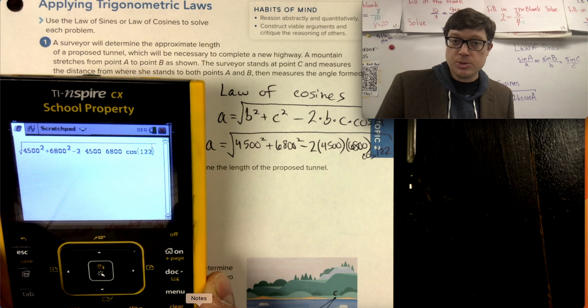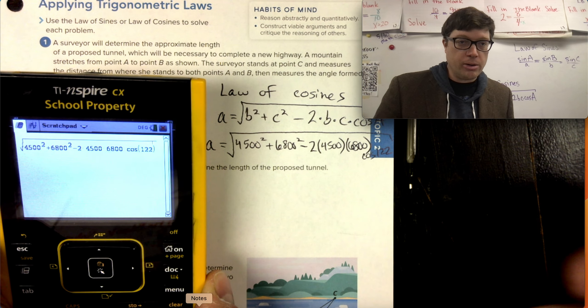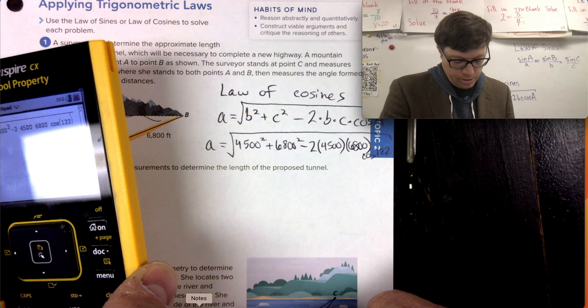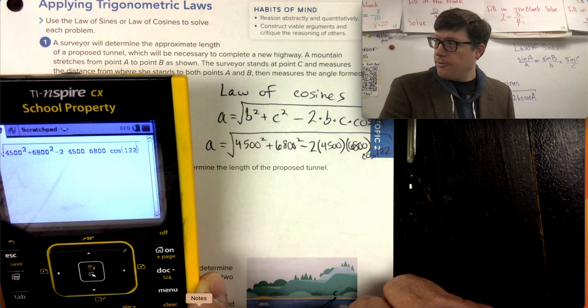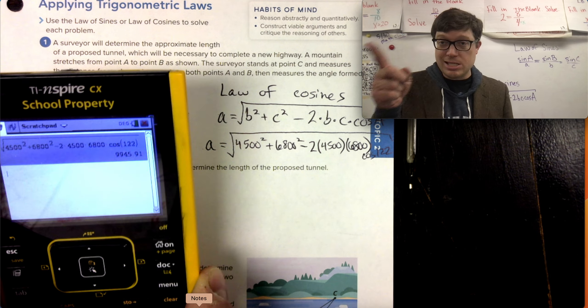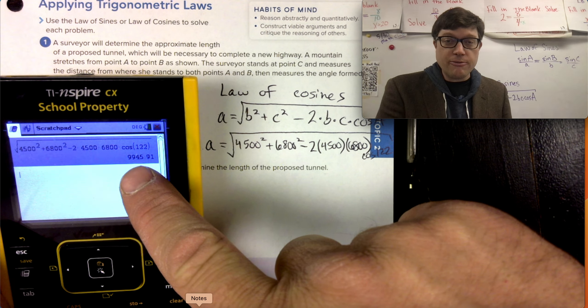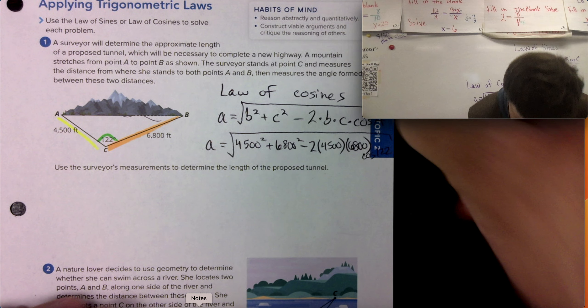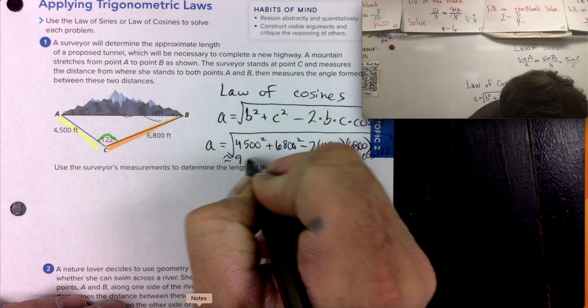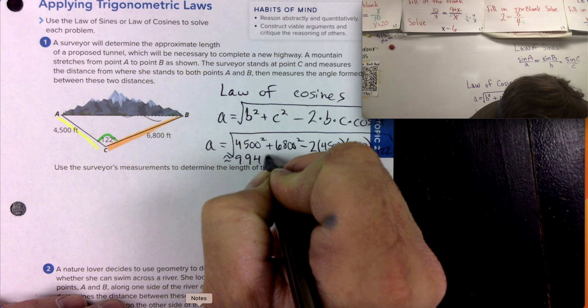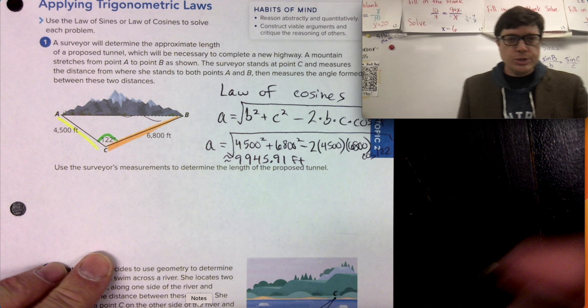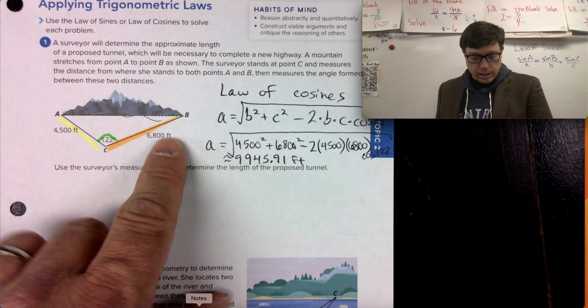Practicing typing all of that in the calculator, that's a skill you need to know. Desmos works. Just make sure you're in degree mode. Now let me press enter to get the points. From this information, the distance between those two points on the surveyor is 9,945.91.